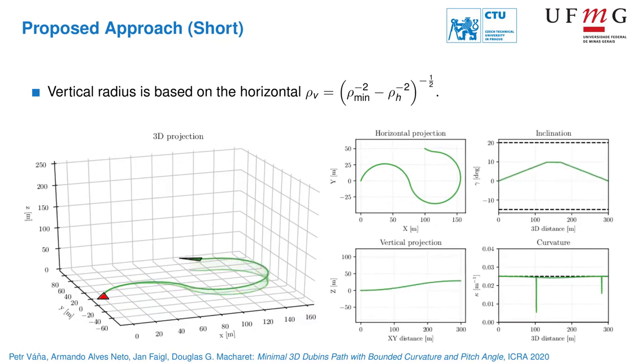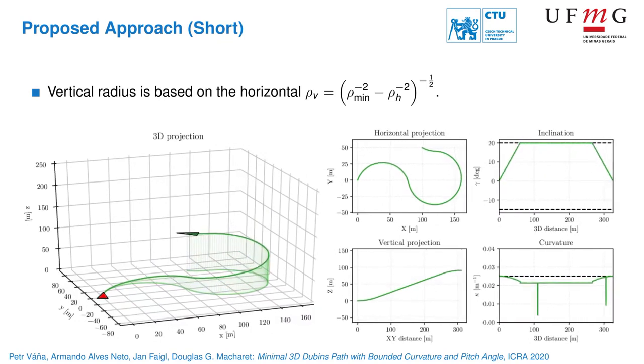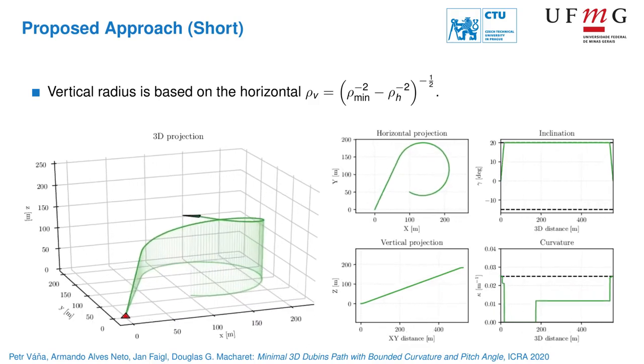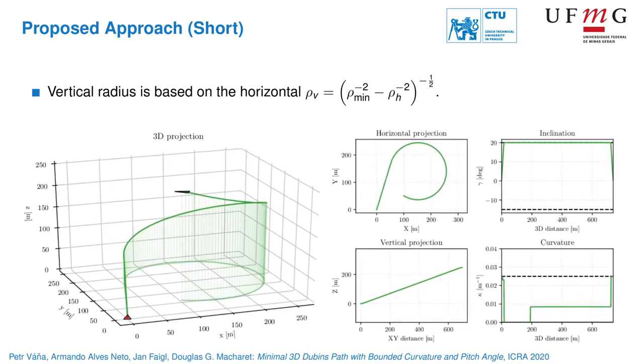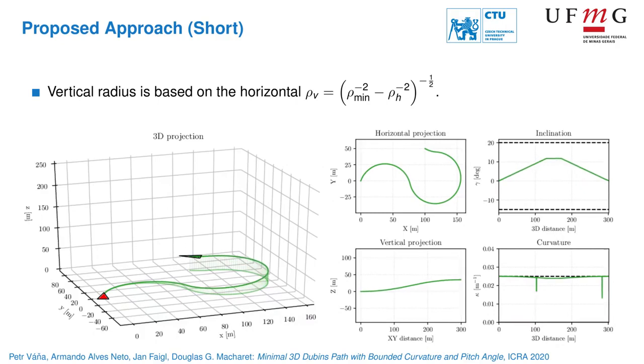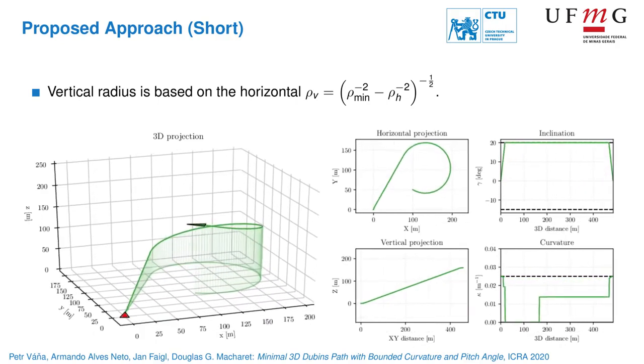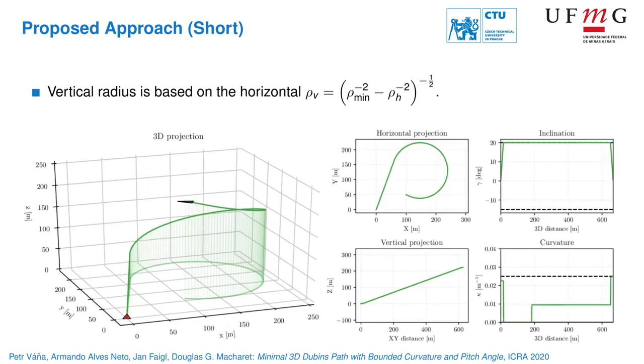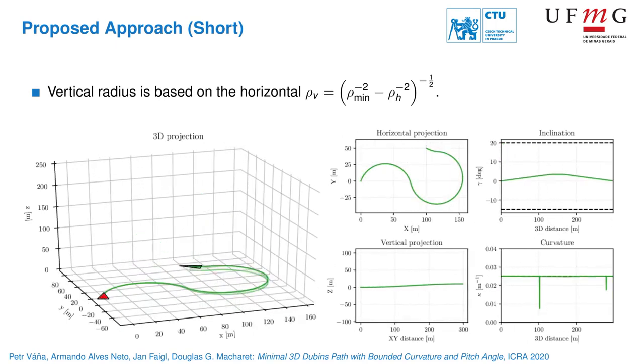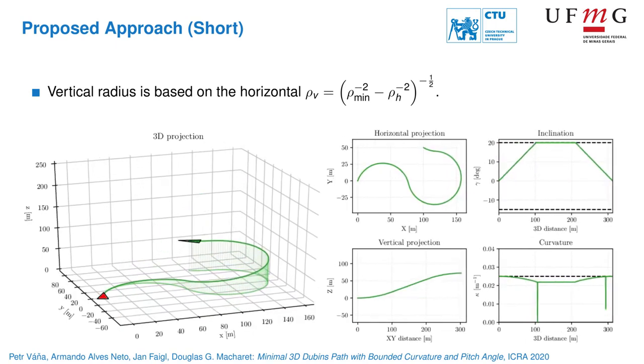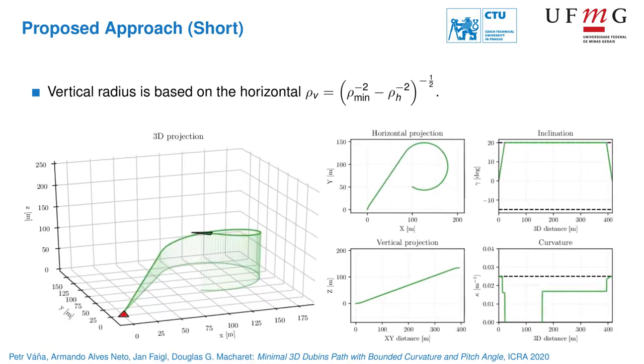When the endpoints are mutually close, the increase of the horizontal turning radius is more significant than for distant endpoints. These mutually close instances are called short in the literature. Although short instances may seem more challenging, the proposed algorithm is able to provide high-quality solutions.